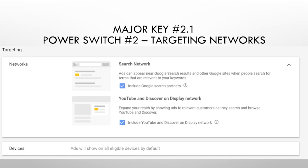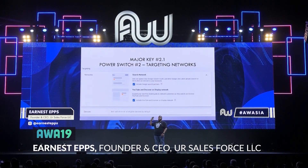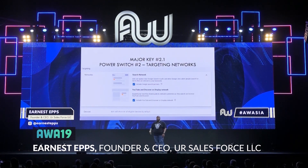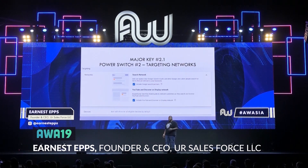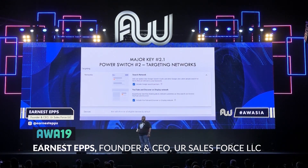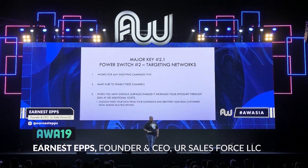The next thing you've got to do is make sure that you turn on the targeting networks, specifically in shopping campaigns. When you're actually setting a campaign up, Google's going to ask you: do you want your products to show up on the search network? Do you want your products to show up on YouTube? The search network is mostly checked by default, but YouTube — if you don't have that checked, go inside your campaigns right now and check that so you can start running traffic on YouTube too.